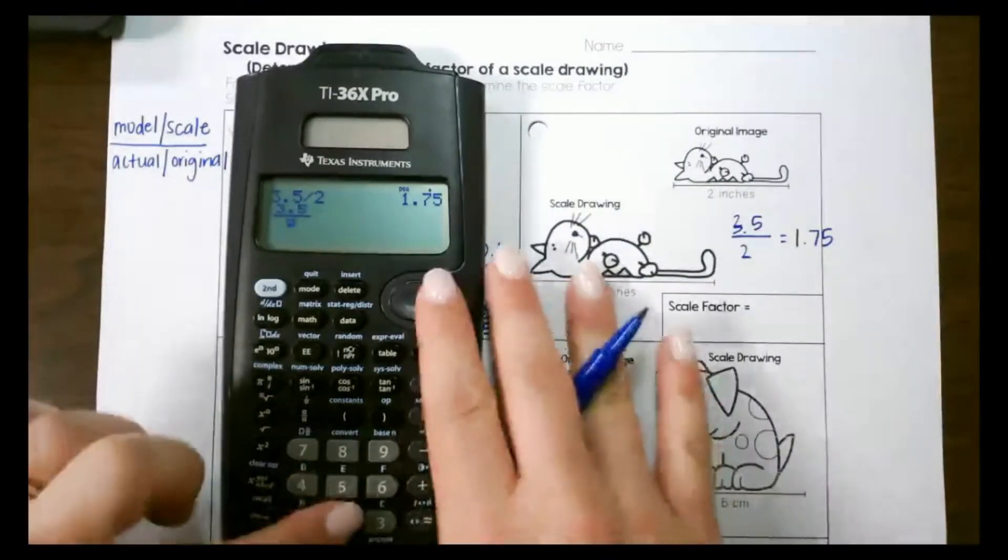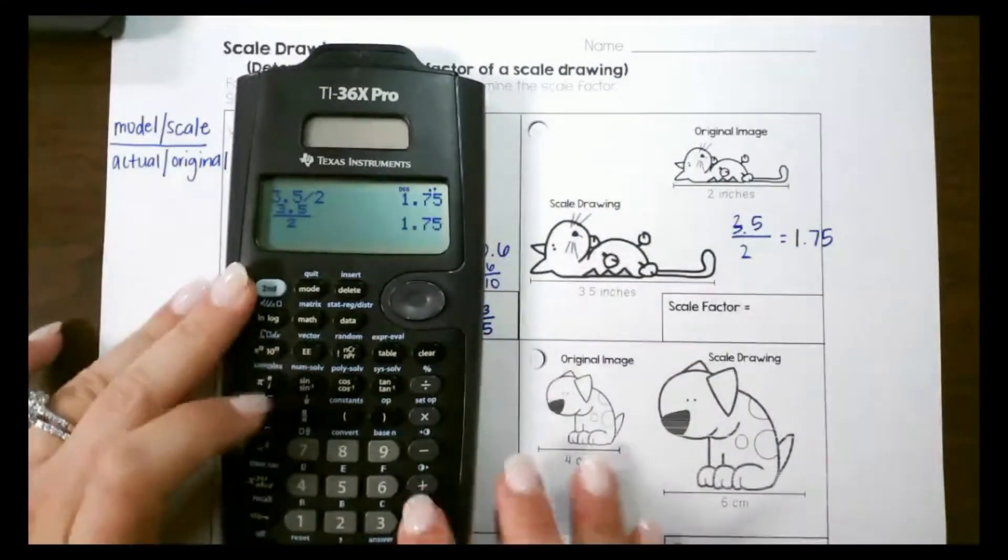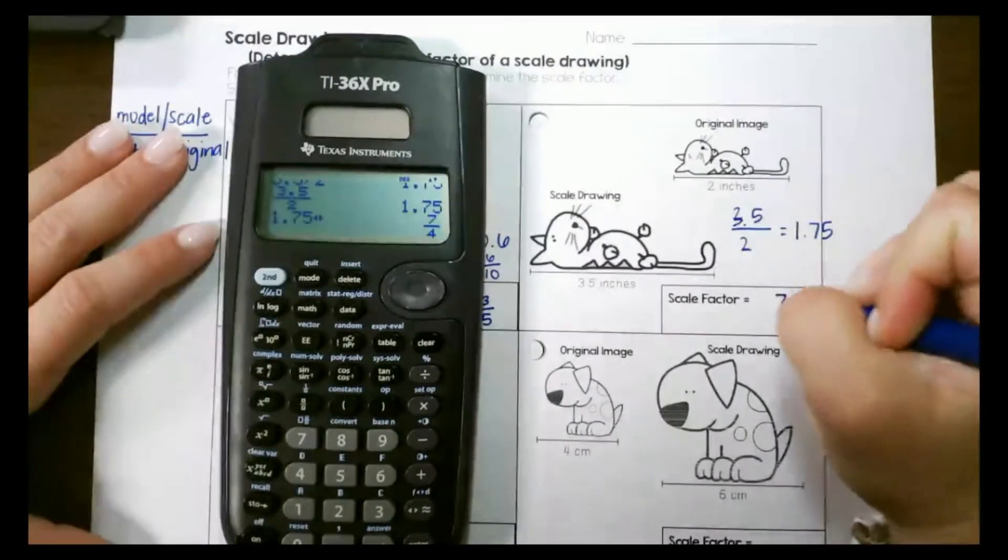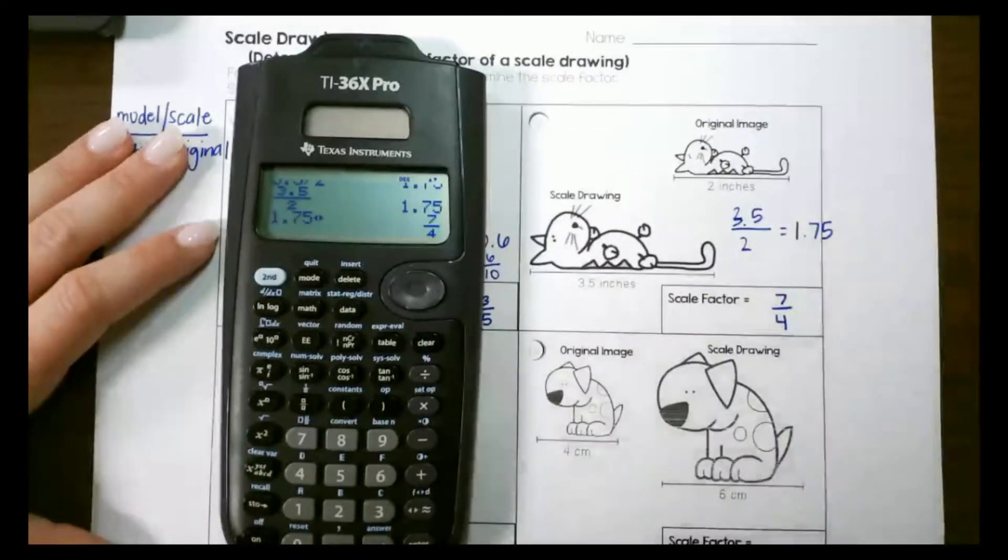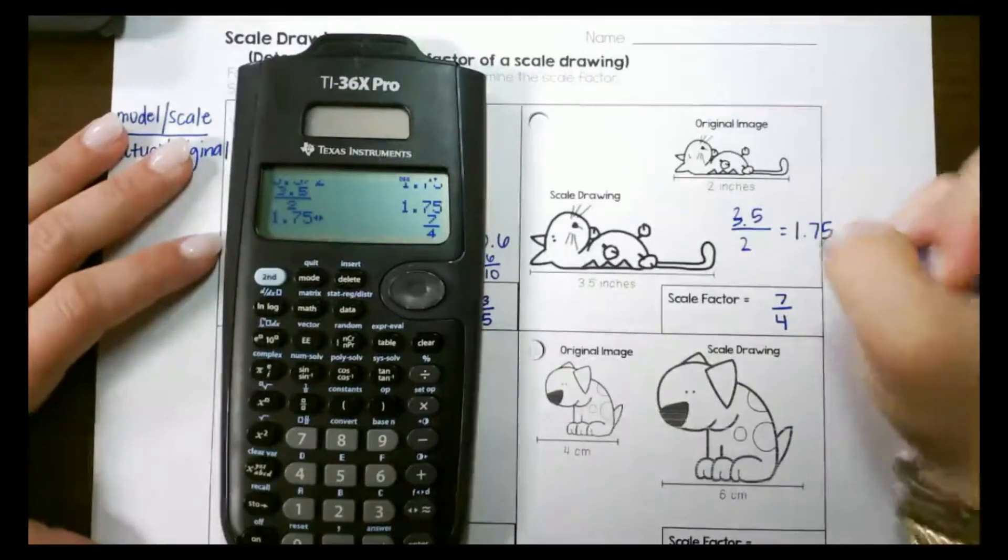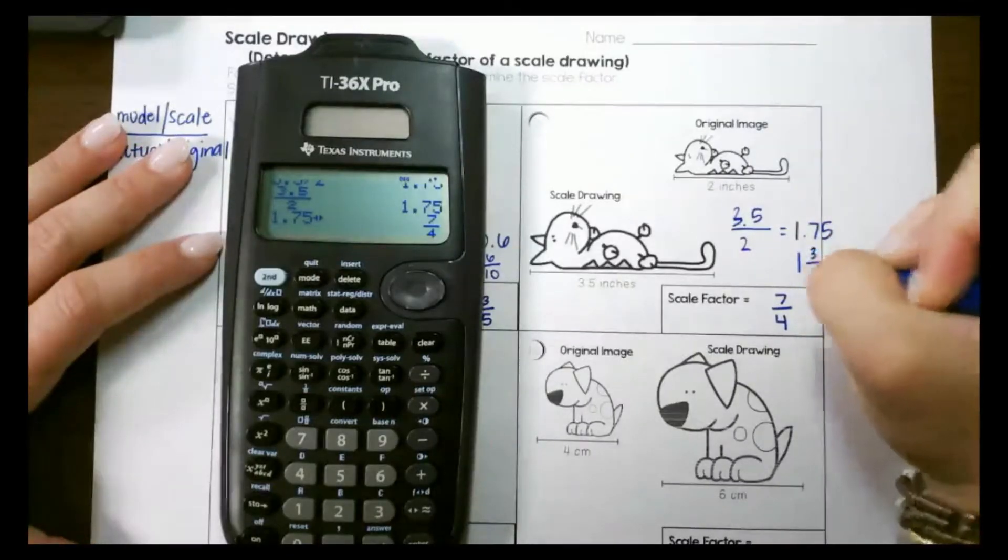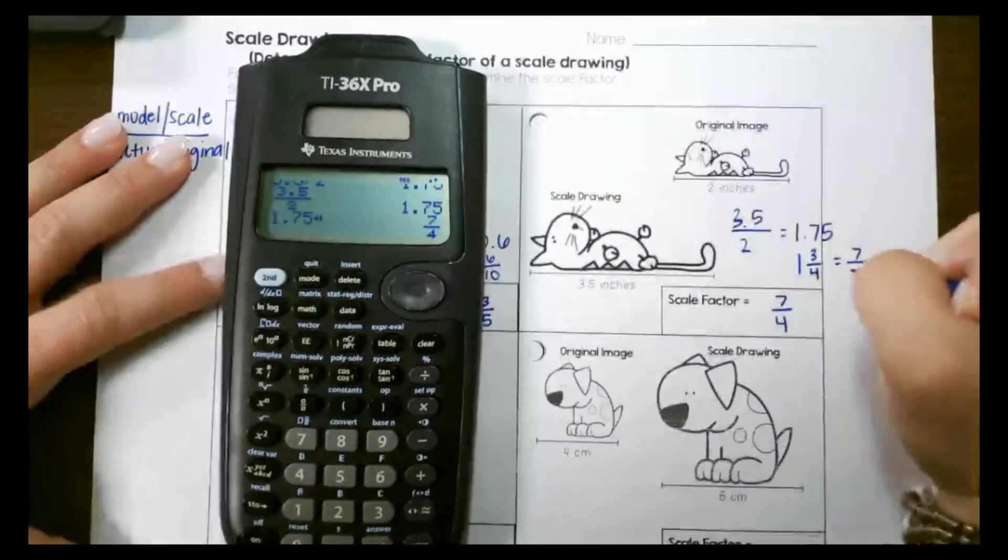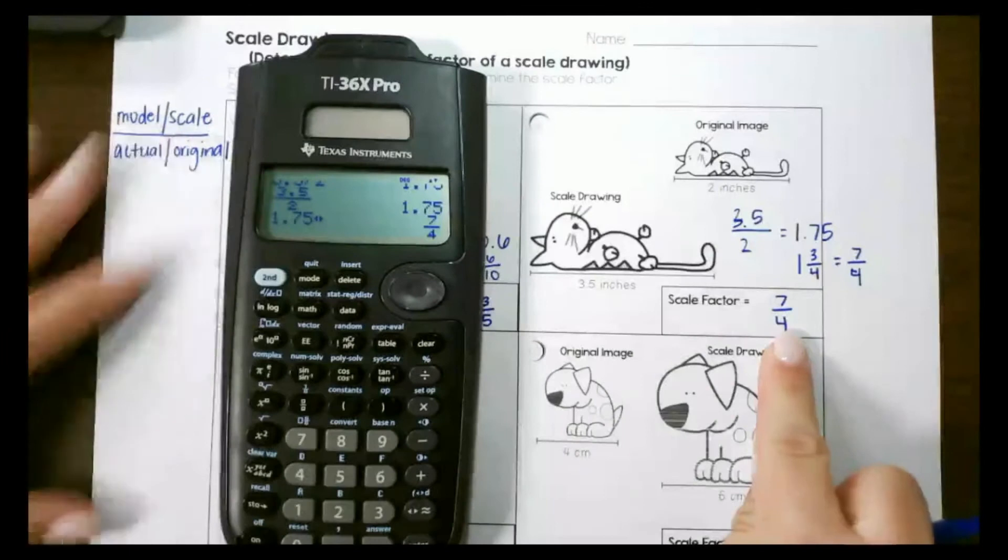So remember that 1 and 75 hundredths is the same as 1 and 3 fourths and you could change this back to an improper fraction to be 7 fourths if it just wants the ratio.